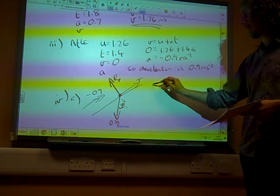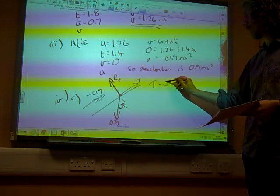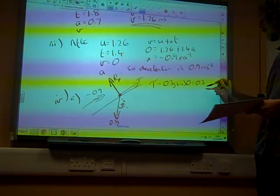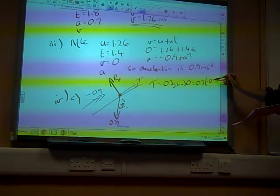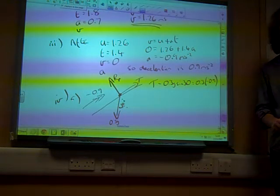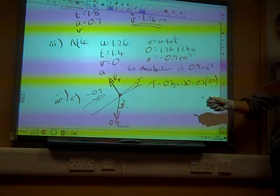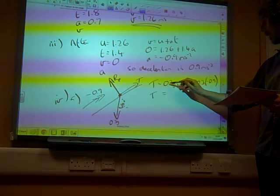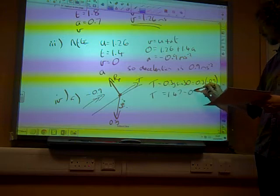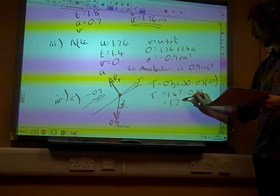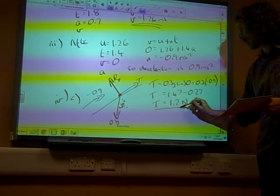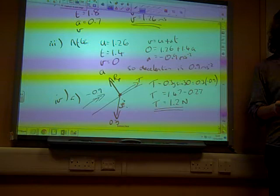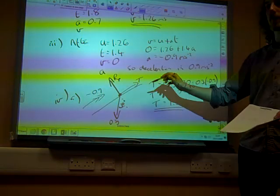So, we have T minus 0.3G sin 30 is mass times acceleration, which is minus 0.9. And if I rearrange that equation, I get T is, well, this gives us 1.47 minus 0.27. So, I have a tension in the string of 1.2 newtons. And that was just from carefully looking at what happens to particle P.